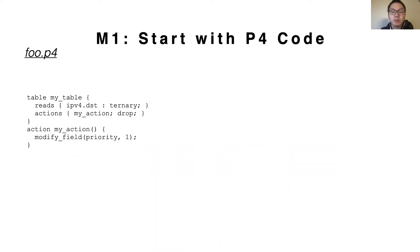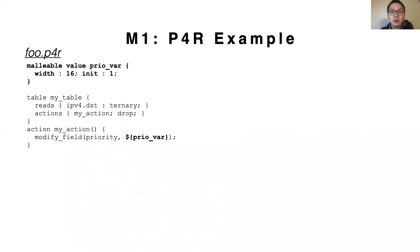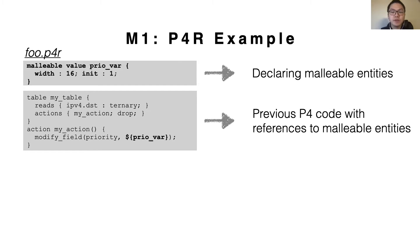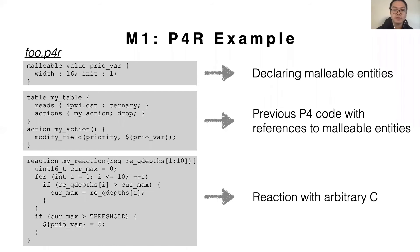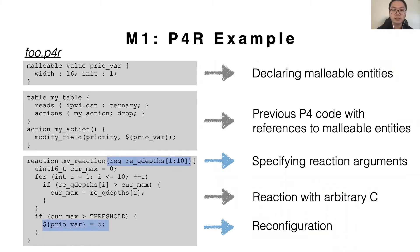To understand what P4R programs look like, let's first start with a simple P4 code snippet. Here's a table and action that, based on the destination address, assigns the priority level. What if we want to reconfigure this priority based on the queue depths? Let's look at how to write the corresponding P4R program. First, we declare a malleable entity, for example a malleable value that takes 16-bit value and gets initialized to 1. Next, we replace the constant value with a reference to the defined malleable value. Finally, we define the reaction function that specifies the data plane metrics to poll, the arbitrary C code to compute the control logic on a general-purpose CPU, and the reconfiguration of the malleable entities with a simple syntax.